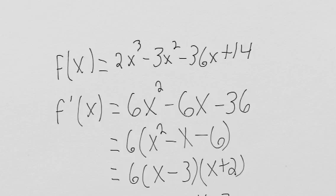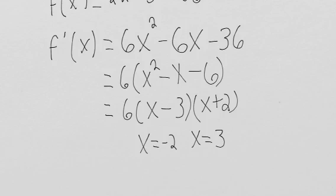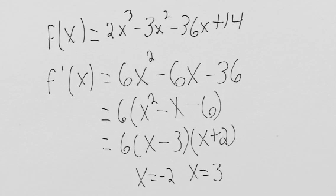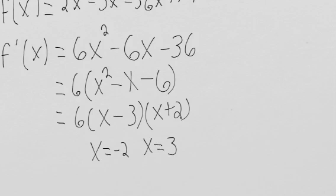Looking back at the original function, it's degree 3 with end behavior down, up. So it'll hit a max, come down and hit a min, then go up. We used to think about positive and negative pieces affecting the graph's shape, but now we can just use the derivative to find exactly where the max and min occur and get an accurate sketch. We'll set up our intervals based on where the derivative is 0.